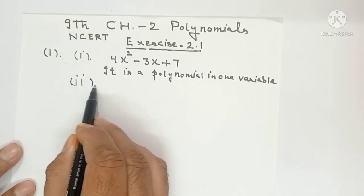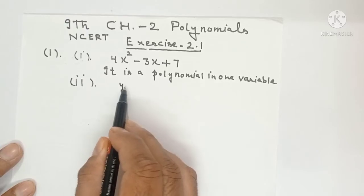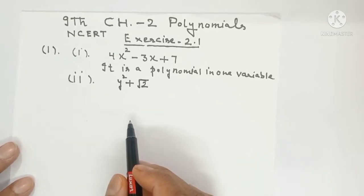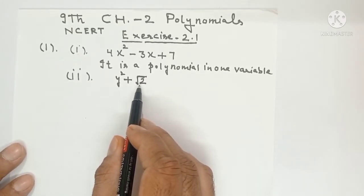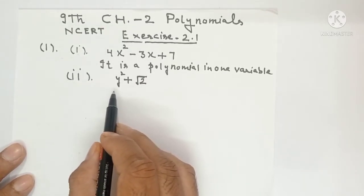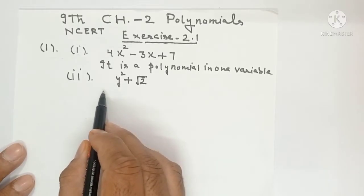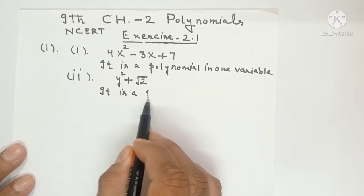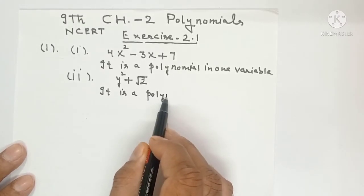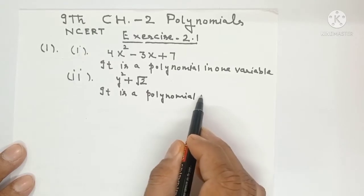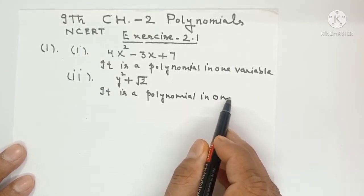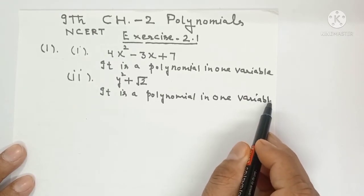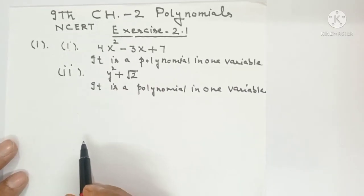Part number 2. Y square plus under root 2. Here it is polynomial. This is polynomial because under root which is on the constant number makes no difference. So what we will write? It is a polynomial in one variable. If there is a variable, which variable? Here you can see Y is the variable. And what was the variable above? X was.